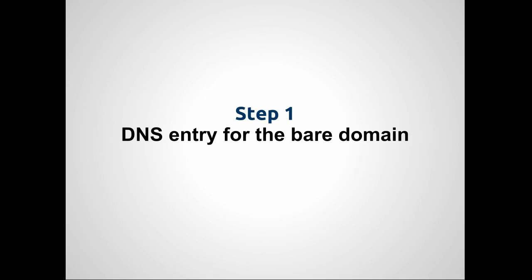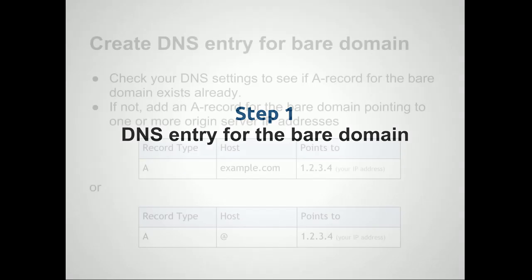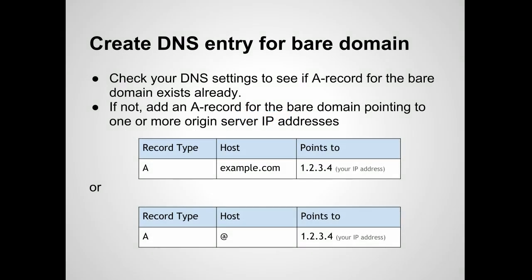Our first step is to configure the DNS setting for the bare domain of your site, so that it points to your origin servers. To do this, go to your domain name registry's website and navigate to the A type record entries for your domain.